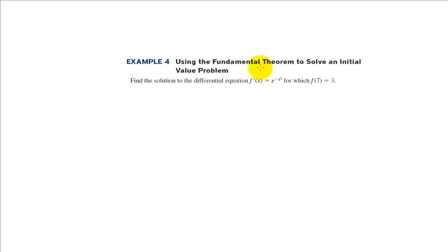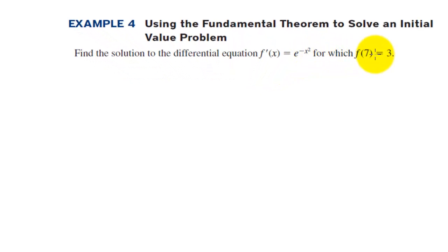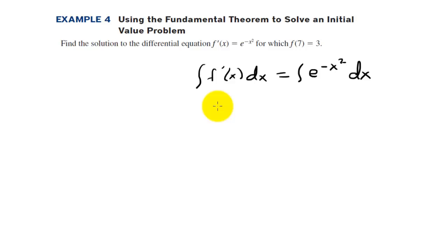In example 4, we're using the fundamental theorem to solve an initial value problem. Find the solution to the differential equation f'(x) equals e to the negative x squared for which f of 7 equals 3. So we're going to take the integral of f prime of x dx, and that's equal to the integral of e to the negative x squared dx. We know this side is just going to be f of x because we're backing up from derivative to function. But this one, we don't know what the anti-derivative of this is.